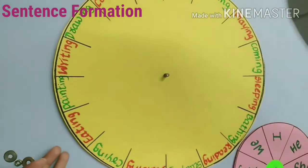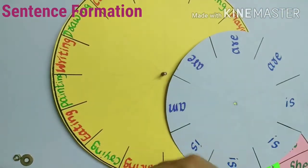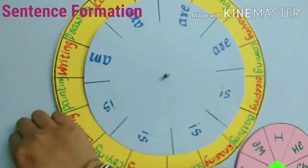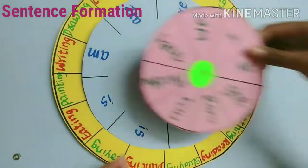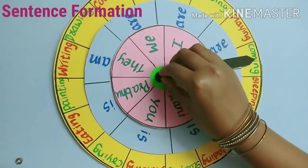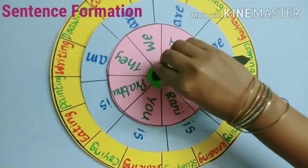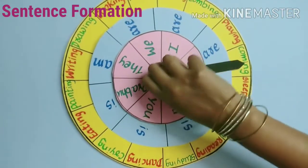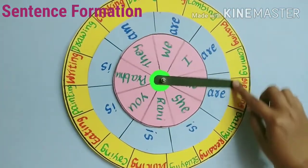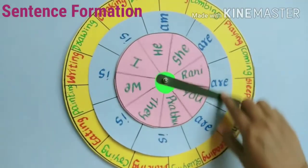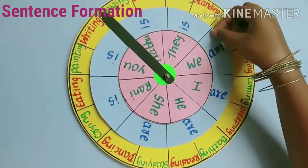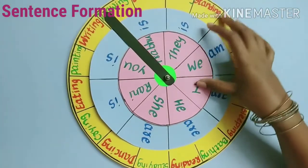Now we will fix these charts. We can see it resembles like a clock. You can move this arrow and also these charts so that we can have so many sentences by these three types.